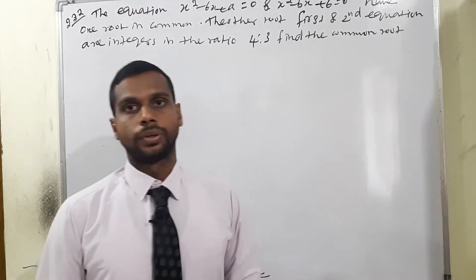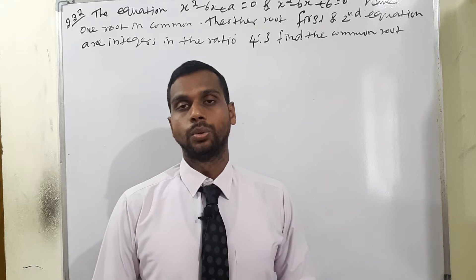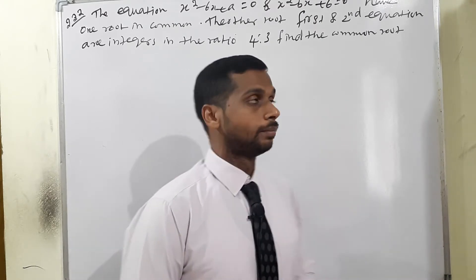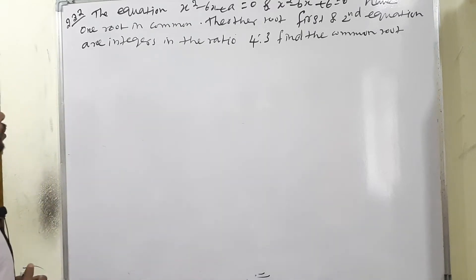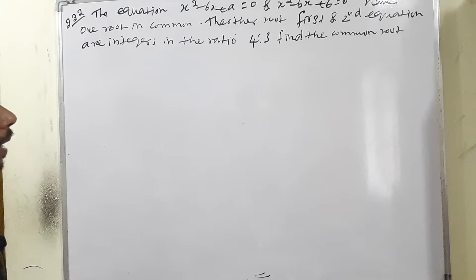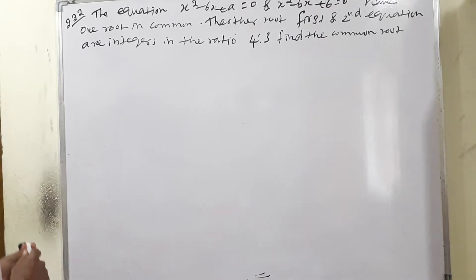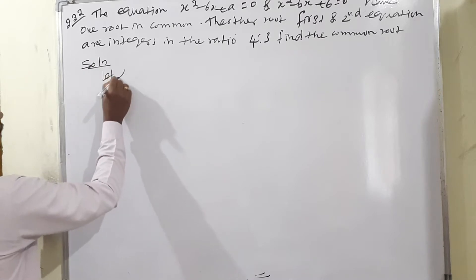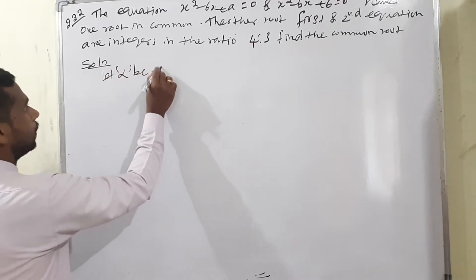Good morning to my dear students. I hope you all are doing well. In this session, we are moving to continuation of example 2.22. The equation x² - 6x + a = 0, and the second equation x² - bx + 6 = 0, have one root in common. For the solution, let alpha be the common root.